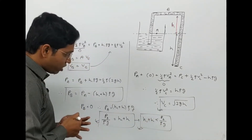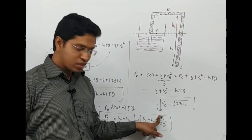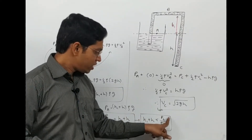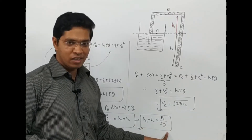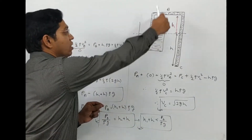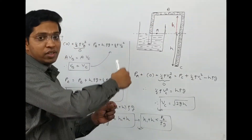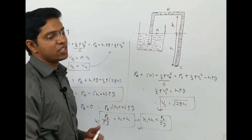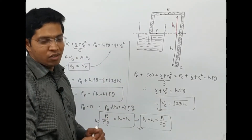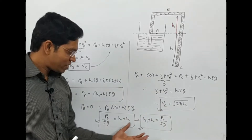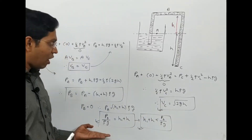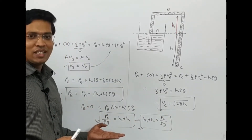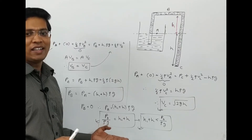Substituting values — P-naught is 10 to the power 5, rho is 10 to the power 3, and g is 10 — this works out to approximately 10 meters. So if h1 plus h is greater than 10 meters, the siphon will not work. We have now seen both conditions mathematically and theoretically.